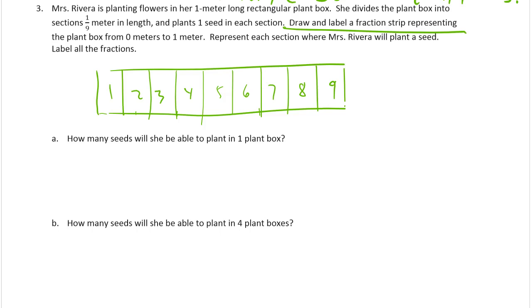And we're going to label 0 9ths there. And this right here is 1 9th. That's 2 9ths, 3 9ths. Just like a ruler, you don't actually have 3 9ths until you get to that 3rd mark from the end. 5 9ths, 6 9ths, 7 9ths, 8 9ths, 9 9ths. And I could do this, 1 meter. Okay, so did we do everything we're supposed to do? Draw and label a fraction strip representing the plant box from 0 meters to 1 meter. Done. Represent each section where she will plant a seed. We did that and label all the fractions. Done.